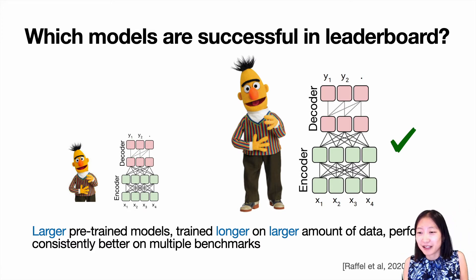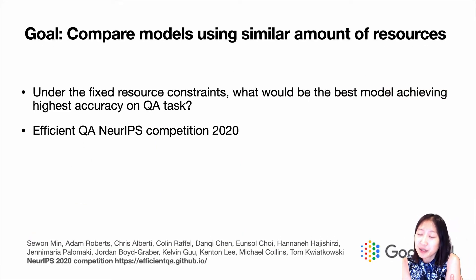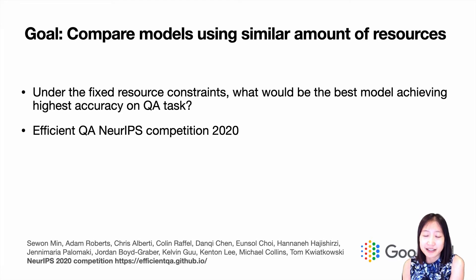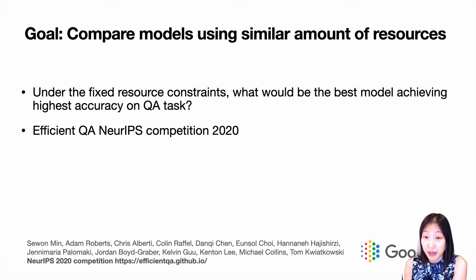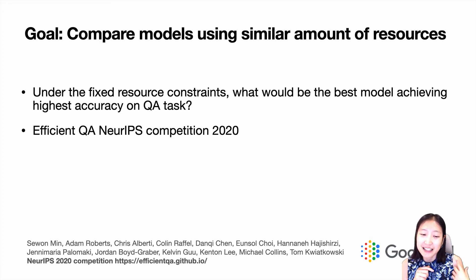Given that we know larger resources result in better performances, how can we do a more apples-to-apples comparison across different models? In 2020, we hosted an NeurIPS competition named Efficient QA with the goal of comparing models that use similar amounts of resources. The question was: under fixed resource constraints, what would be the best model achieving highest accuracy on QA? This was joint work with Tom Kwiatkowski at Google AI, Sewon Min at the University of Washington, and many others.